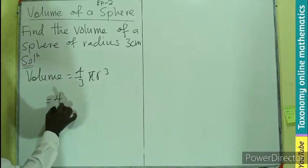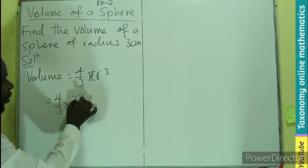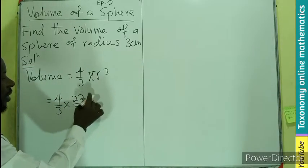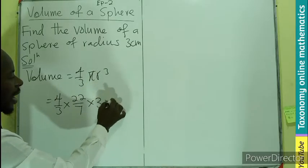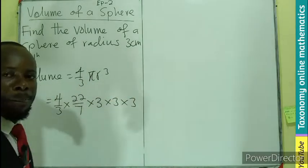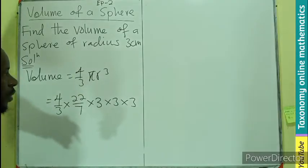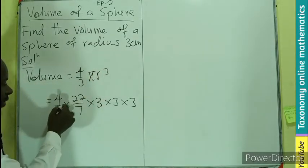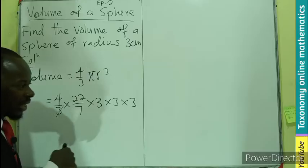We're going to have 4 over 3 times 22 over 7. What about the r? It will be 3 times 3 times 3, all of them to the power 3. This 3 is a denominator, therefore it will cancel this numerator.